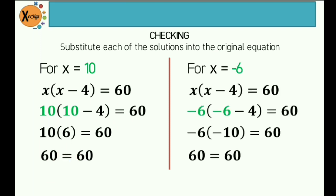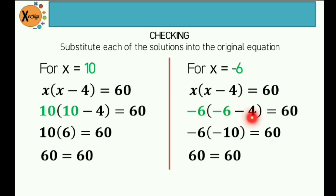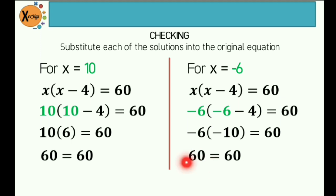Next, for x equal to negative 6, write the original equation: x quantity x minus 4 is equal to 60. So therefore negative 6 quantity negative 6 minus 4 is equal to 60. The difference of negative 6 and 4 is negative 10, times negative 6 is positive 60. So 60 is equal to 60. Therefore, this is another solution. So both solutions are true.